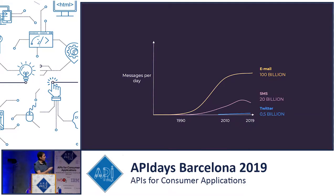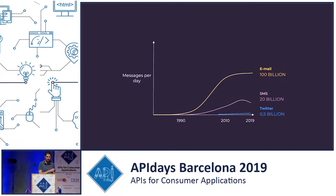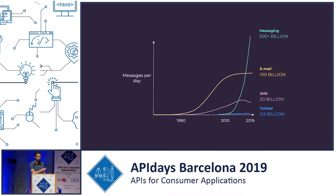You can see here the evolution of different text communication channels over the last decades. It might come as a surprise that channels like email or SMS have been stagnant or even declining over the last decade. The reason is very simple: in 2008, a new channel appeared and it's been growing exponentially ever since — and this is messaging. Here I'm combining all the mobile messaging apps like Facebook Messenger, WhatsApp, Telegram — all of those.